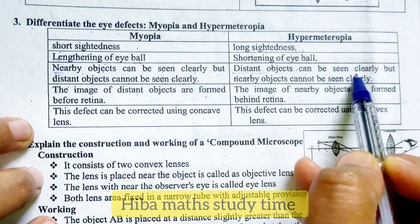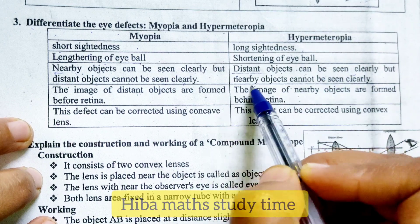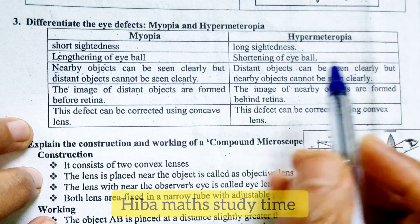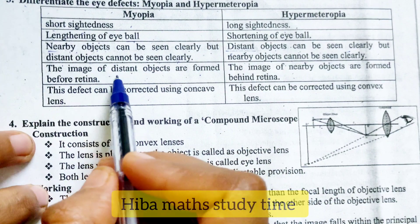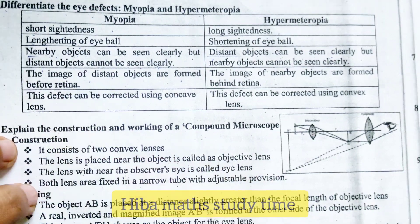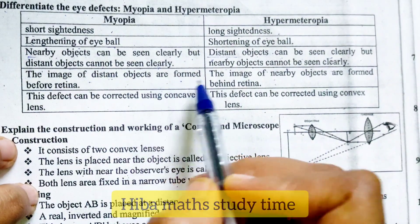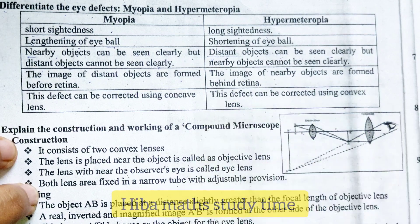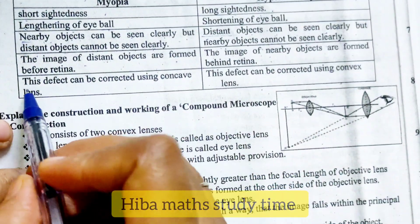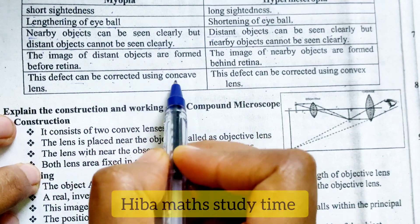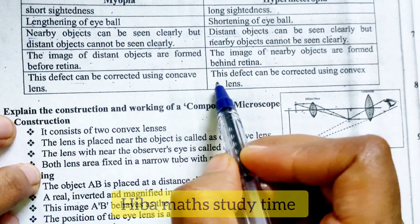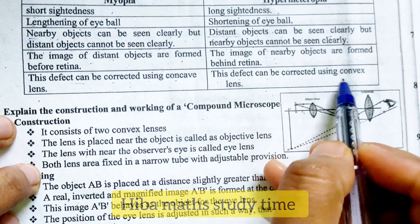Hypermetropia: distant objects can be seen clearly, but nearby objects cannot be seen clearly. The image of distant objects are formed before retina. The image of nearby objects are formed behind retina. This defect can be corrected using concave lens. This defect can be corrected using convex lens.